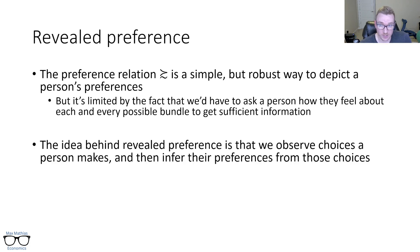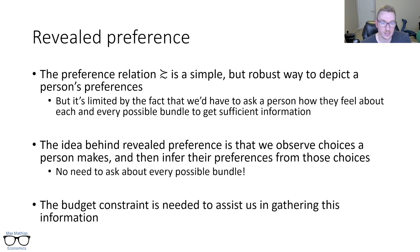The idea behind revealed preference is that I basically just watch a person make choices in their day-to-day life. And then from that, I can infer their preferences from these choices. So instead of basically asking you how you feel about each and everything, what I'm simply going to do is watch you make your choices. And from that, I can basically reverse engineer those preferences simply by watching what you do. No need to ask about every possible bundle. The only caveat to this is that we need the budget constraint to assist us in gathering this information.